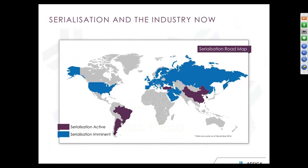Where we are in the industry: serialization legislation is already in place in countries like Turkey, Brazil, South Korea, and China. It is coming into effect in the US in 2017, and it will be required for all prescription drugs in all new EU countries by February 2019. Different countries will have their own individual legislation and requirements, and pharmaceutical companies will need to meet the needs of all those they operate in now, and prepare for future legislation coming into effect. Across the industry, we're seeing different levels of preparedness, depending on whether the pharmaceutical company is already serving a particular country with legislation in place or not.